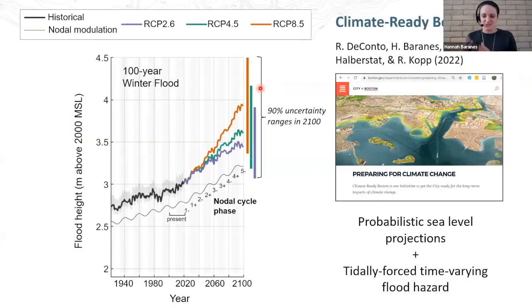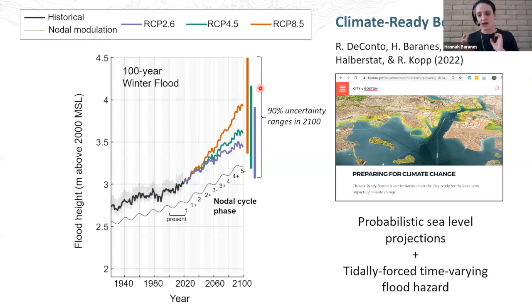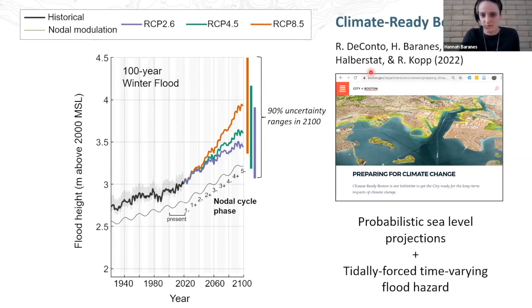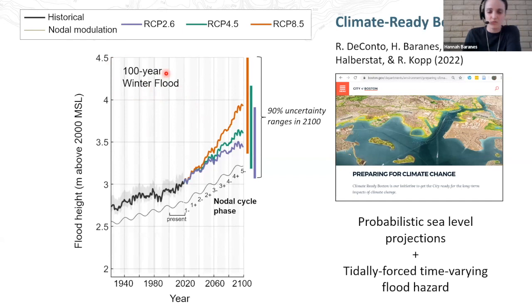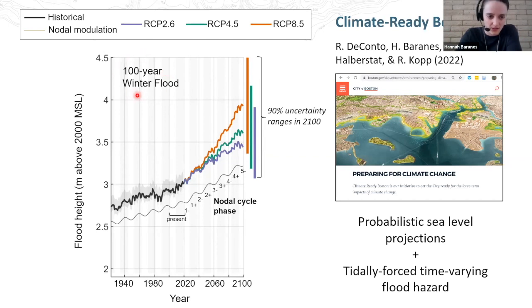It's a bit of an esoteric exercise to apply that to events that already happened. What we then wanted to do was combine that new methodology to look at how tidally forced, time-varying flood hazard interacts with the slow and steady rise in sea level to influence future flood hazard. I worked with this group to develop projections for the city of Boston as part of the Greater Boston Research Advisory Group. As an example of the type of information we were able to produce, this is a plot showing a time series of the height of the 100-year winter flooding event. We separate winter and summer because in winter we're primarily impacted by extratropical cyclones like nor'easters, whereas in summer it's tropical cyclones or hurricanes—they require separate statistical treatment.